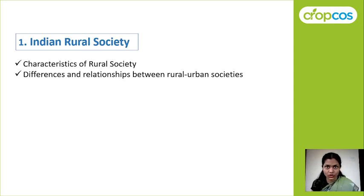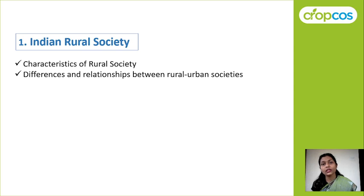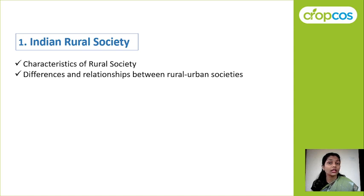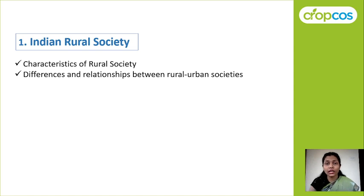So first of all, what is a Rural Society? A society which lives in villages and is dependent on agriculture. What does it exactly mean? It means that the most productive resource of a Rural Society is land. So land is the most productive resource in a rural area.